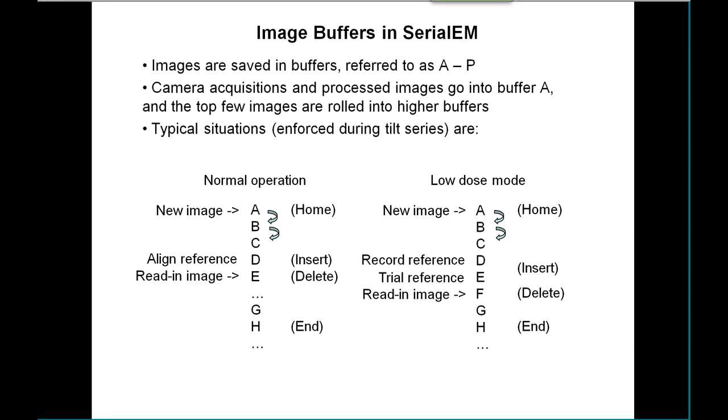New camera acquisitions and processed images always go originally into buffer A. Whatever is in A gets scrolled down to B and B gets scrolled down to C, to as far as you've selected to have this scrolling set of buffers.